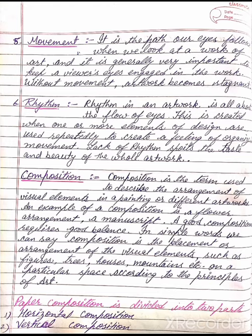A good composition requires good balance. In simple words, composition is the placement or arrangement of visual elements such as figures, trees, houses, mountains, etc. on a particular space according to the principles of art. Paper composition is divided into two parts: horizontal composition and vertical composition.